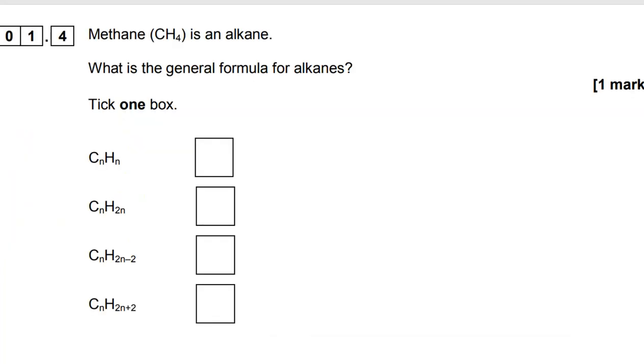On to 1.4. Methane is an alkane. What's the general formula for alkanes? Well, I've written out the formula of two more alkanes here, propane and butane. And let's take a look at what happens if we make the number of carbons N.